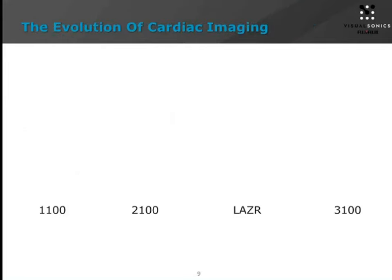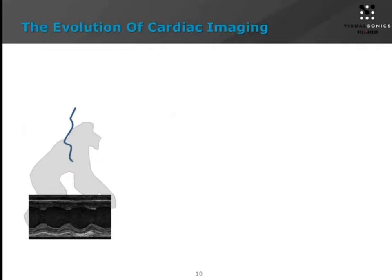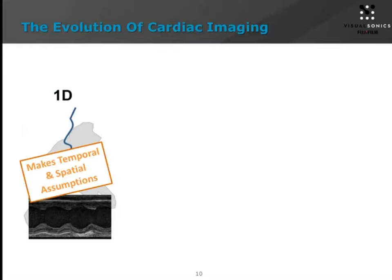Moving on to cardiac imaging specifically — there's been quite an evolution over time, going back in the history of ultrasound with cardiac imaging all the way from the early beginnings of M mode imaging, which is a one-dimensional imaging application looking at a single line down through a tissue over time, with the ability to measure things like wall thickness and chamber dimensions. However, M mode makes a lot of temporal and spatial assumptions about the ratio of thickness to length of the heart, and you're really only sampling in one line over a short period of time.